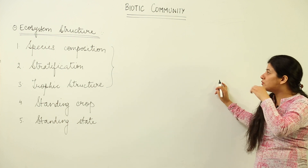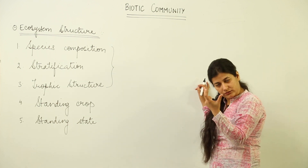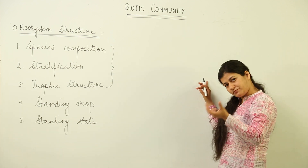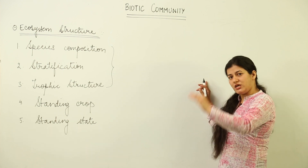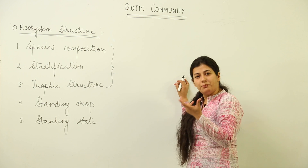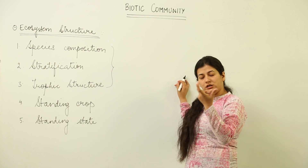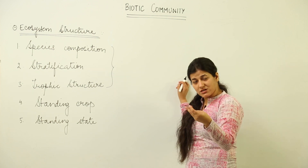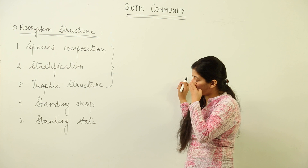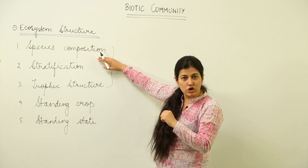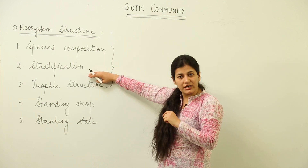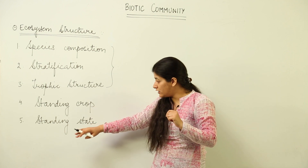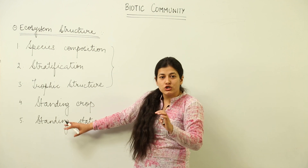The ecosystem is the basic entity of ecology. We study environmental interactions in a given area with reference to the ecosystem — for example, a pond ecosystem, a forest ecosystem, a tropical forest ecosystem, or a desert ecosystem. Within any ecosystem, we study its species composition, stratification, trophic structure, standing crop, and standing state.